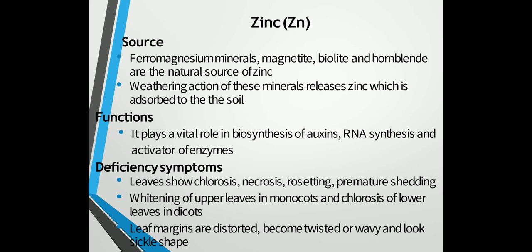The next micronutrient is zinc. Like copper, it is found in the soil in very small quantities, largely resulting from the concentration and addition from growing plants and added residues. Ferro-magnesium minerals, magnetite, biotite and hornblende are the natural sources of zinc. Weathering — meaning the powdering — of these minerals releases zinc which is absorbed to the soil.